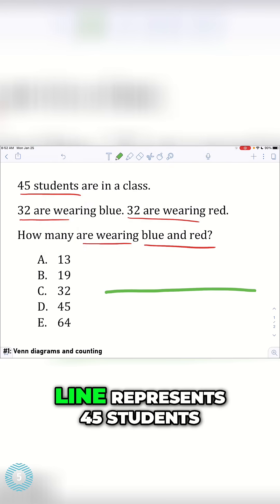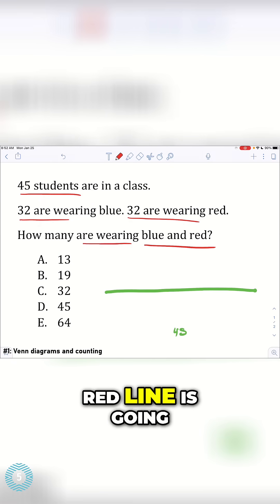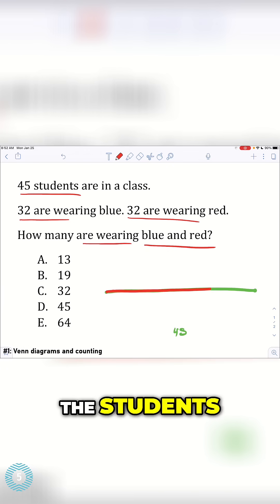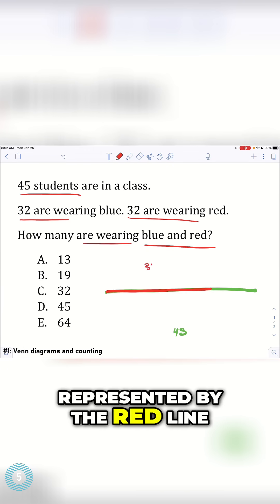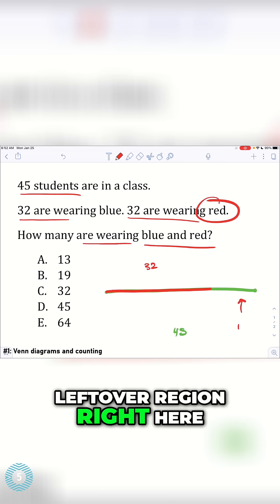Imagine that this green line represents 45 students. Now imagine that this red line is going to cover some of the students. This is 32 students represented by the red line, and those 32 students are wearing red. That means that this leftover region right here is 13.